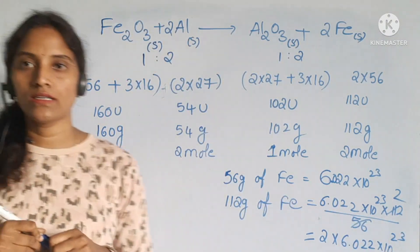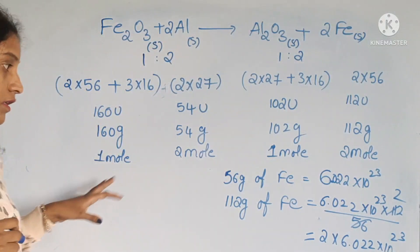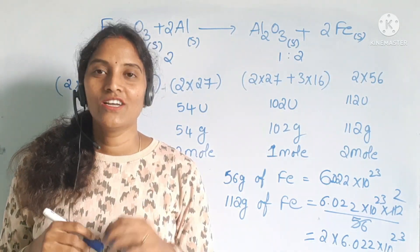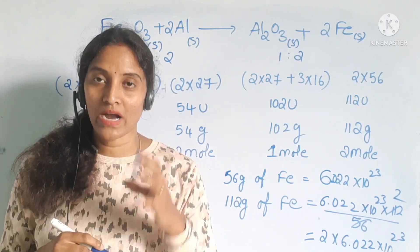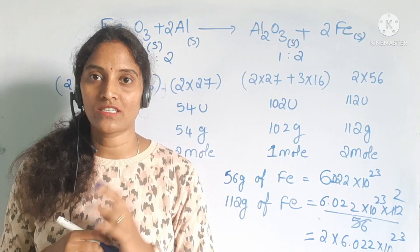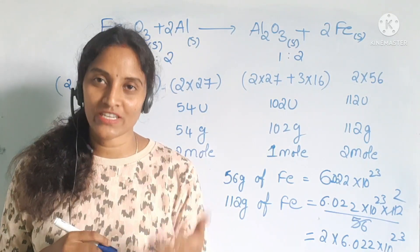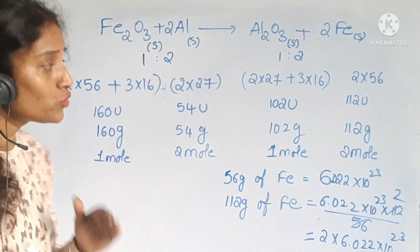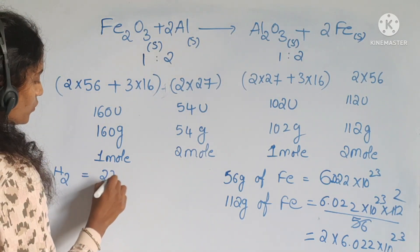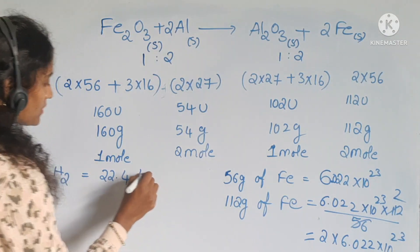The sixth point is: if any gas is involved in that particular chemical reaction, you can equate its masses with their volumes at particular STP conditions, or temperature and pressure. To know this one, you can take one example. 2 grams of H2 gas is equal to 22.4 liters.